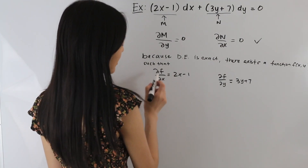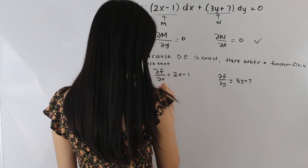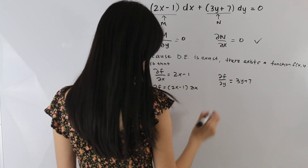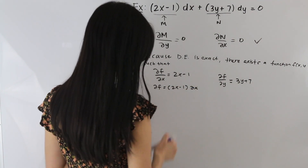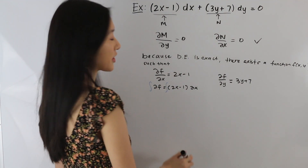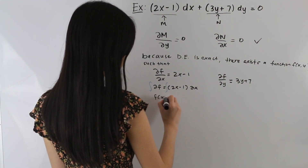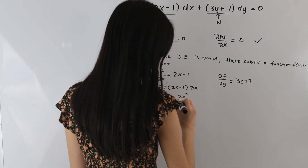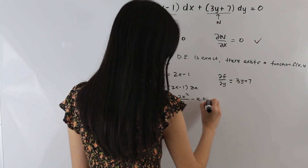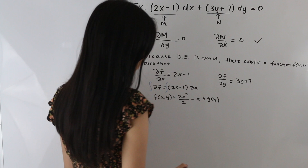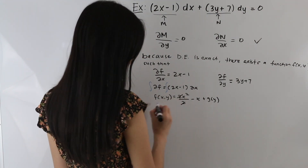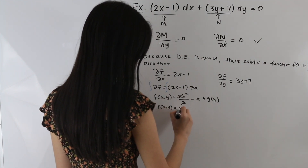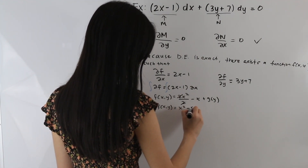The first thing we're going to do is integrate and solve for f. Integrating both sides, we get f(x, y) = 2x²/2 − x + g(y). The 2's cancel out, and this becomes f(x, y) = x² − x + g(y).